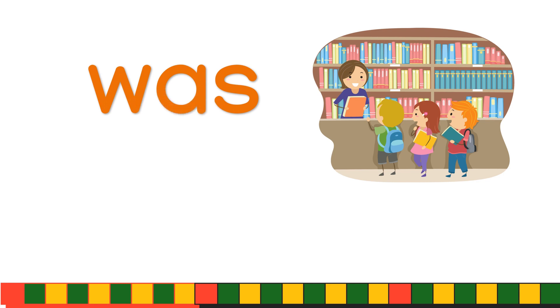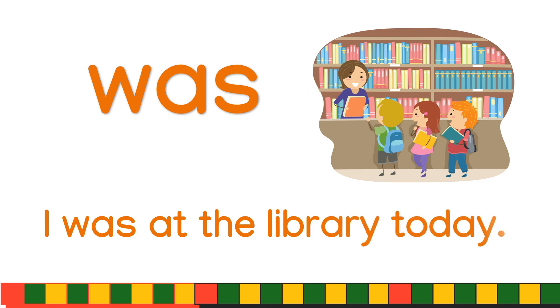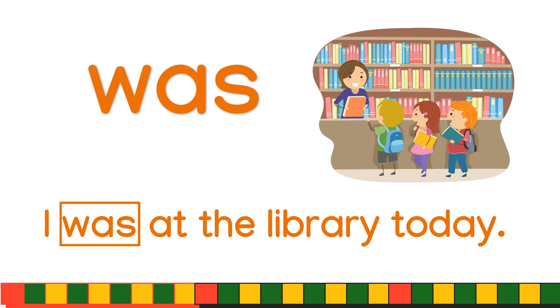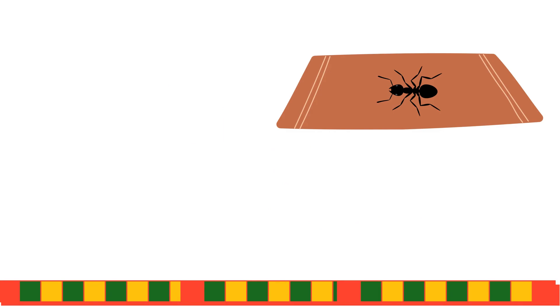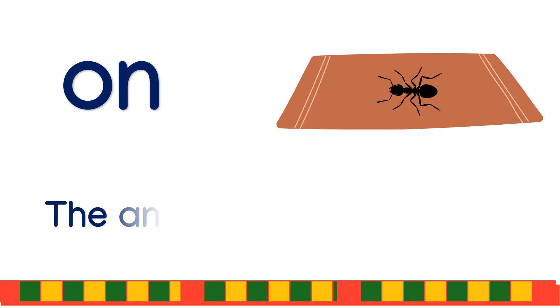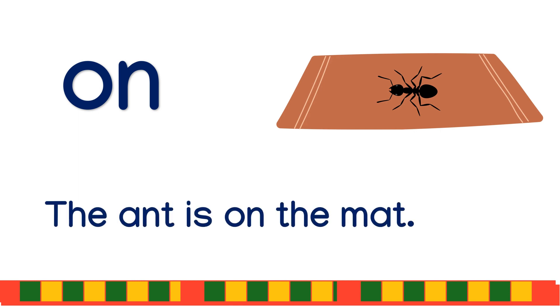Was. I was at the library today. Can you identify the word in the box? Was. On. The ant is on the mat. Can you identify the word in the box? On.